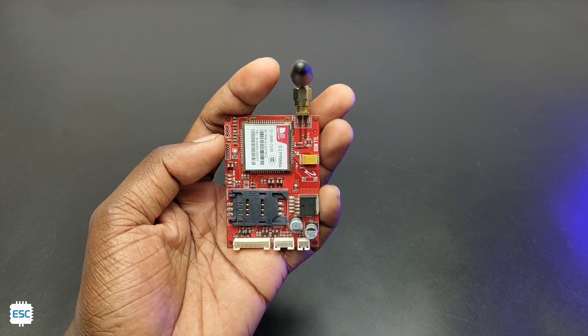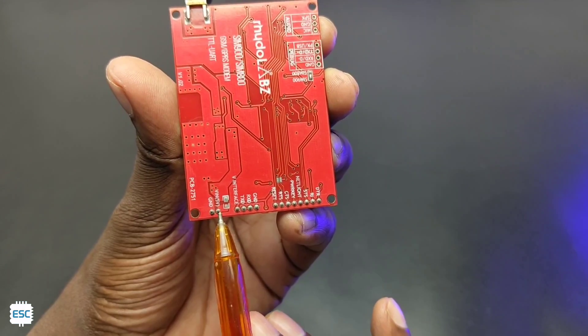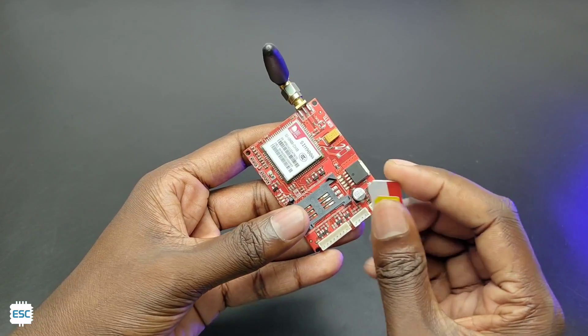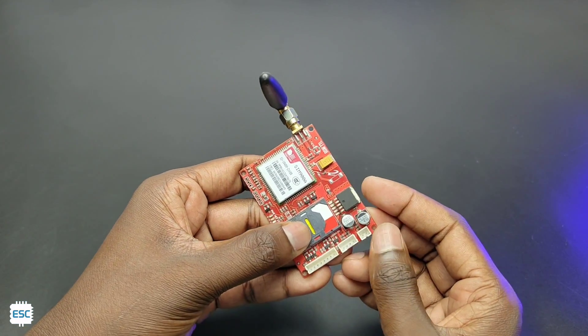So here is the SIM900 module, it has two VCC pins and two ground pins, then a RX pin and a TX pin. This module supports 2G only, so make sure that your SIM supports 2G. First, I inserted the SIM on its socket.